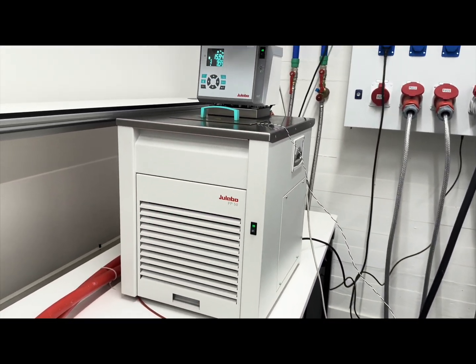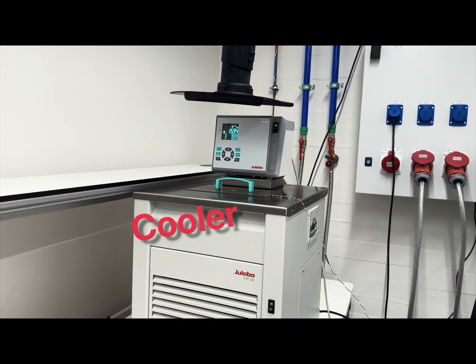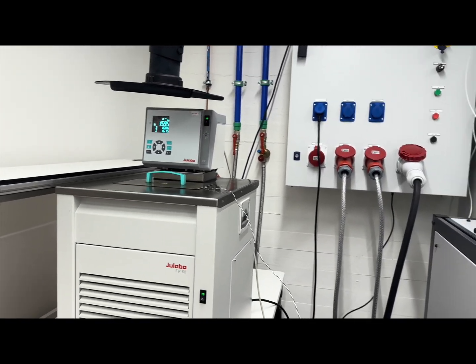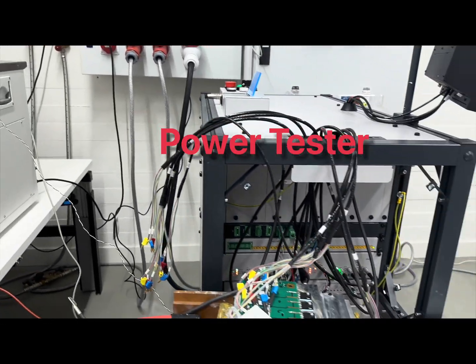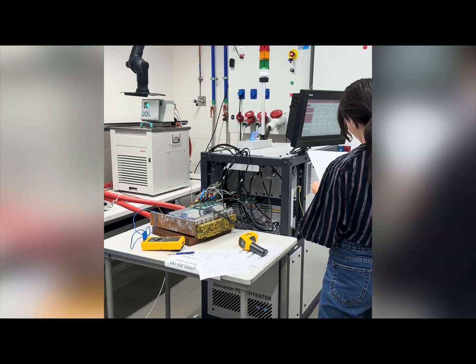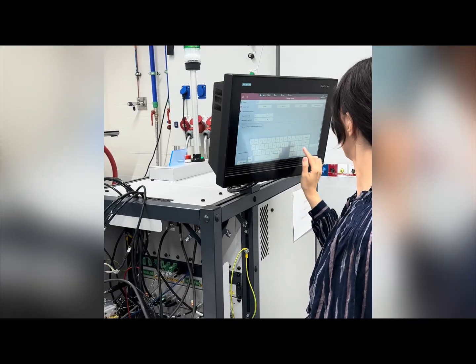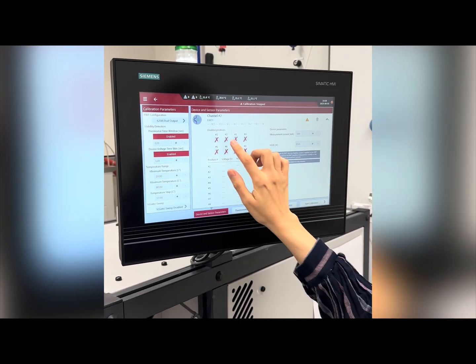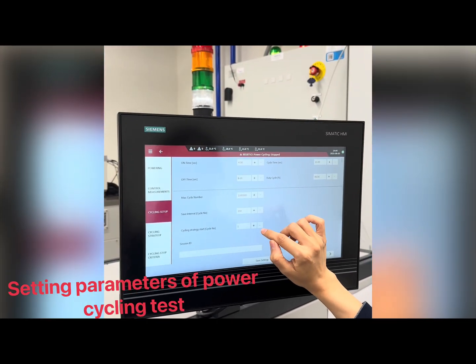We have the 600A power tester in which we can do accelerated aging tests on power devices like IGBTs, MOSFETs, and diodes. This tester makes power cycles on the device, so we can make our own power cycling tests on the devices to figure out the failure mechanisms that can occur due to thermal cycles or power cycles.